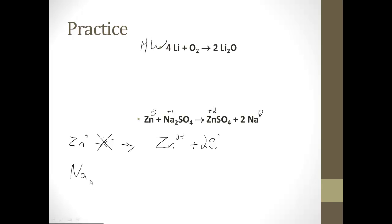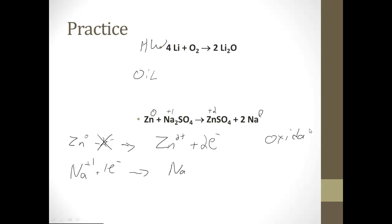Now separate the half reactions. Zinc goes from zero to Zn²⁺ — it lost two electrons, so we write Zn → Zn²⁺ + 2e⁻. For sodium: I just wrote Na (not Na2). Na⁺ gains one electron to become Na: Na⁺ + e⁻ → Na. Zinc lost electrons, so that is the oxidation half-reaction. Sodium is gaining electrons, so that is the reduction half-reaction.